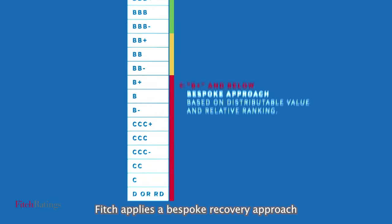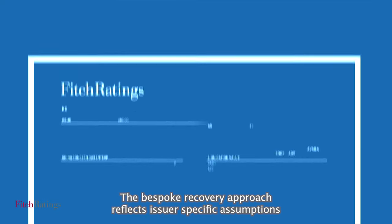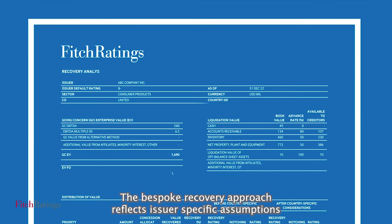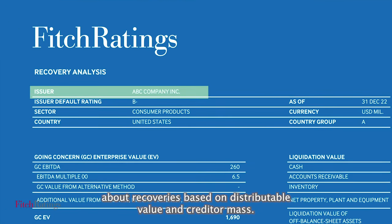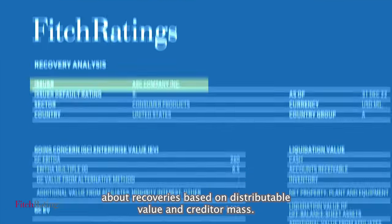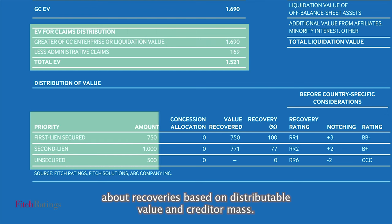Fitch applies a bespoke recovery approach to issuers rated B-plus and below. The bespoke recovery approach reflects issuer-specific assumptions about recoveries based on distributable value and creditor mass.